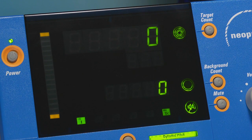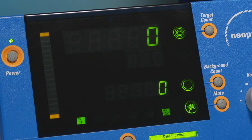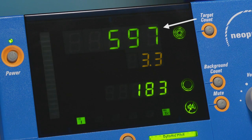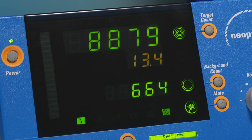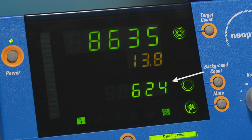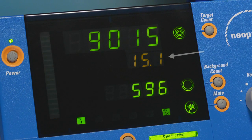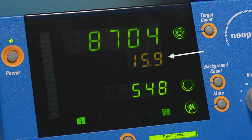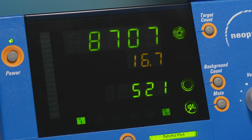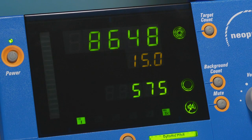In dual isotope mode, the detected count range for technetium-99 is displayed in the target count display. The detected count range for I-125 is displayed in the background count display. The ratio of these counts is displayed in the ratio display. The target count feature is only available for technetium-99 energy range.